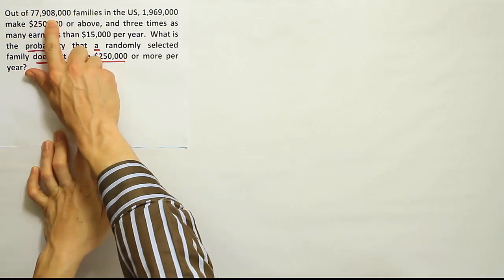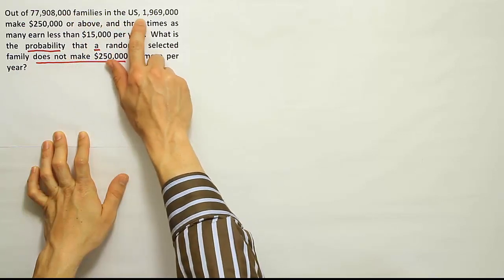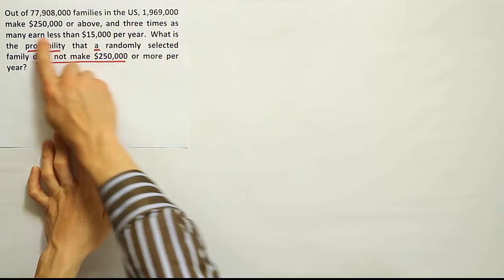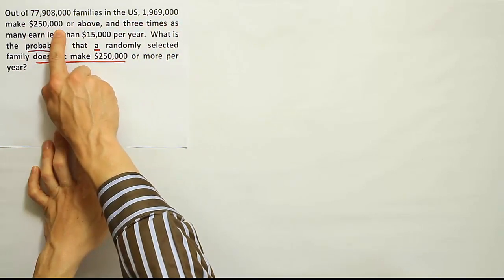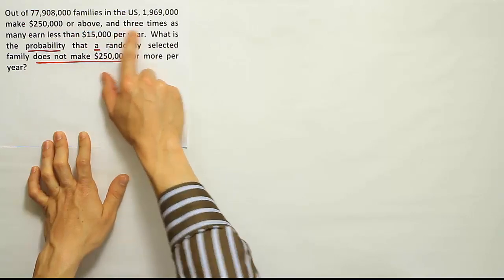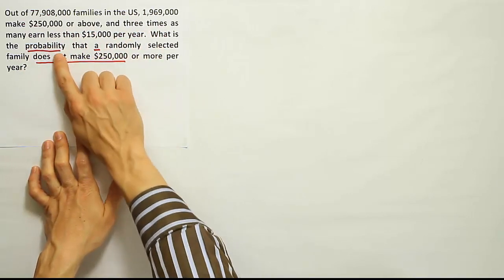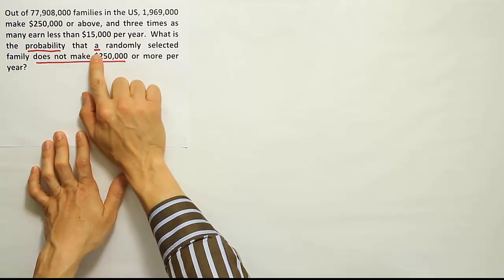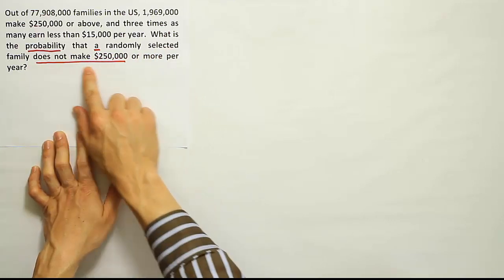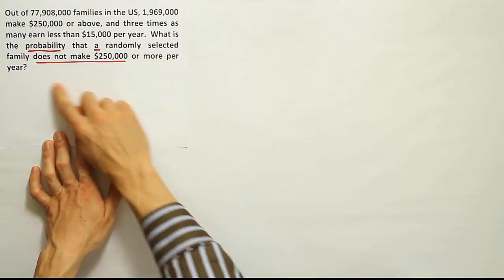Out of 77,908,000 families in the U.S., 1,969,000 make $250,000 or above, and three times as many earn less than $15,000 per year. What is the probability that a randomly selected family does not make $250,000 or more per year?